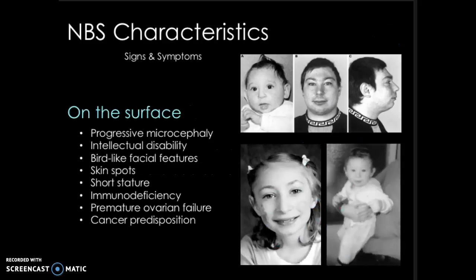Visibly, NBS is characterized by many different signs and symptoms, including progressive microcephaly, which is a condition of unusually small head size. It is typically apparent from birth, and growth of the head seems to be out of sync with the body — it appears as though the head is shrinking as the body grows. Intellectual disability isn't quite apparent until around one or two years old, when developmental milestones and intellectual progress begin to decline.